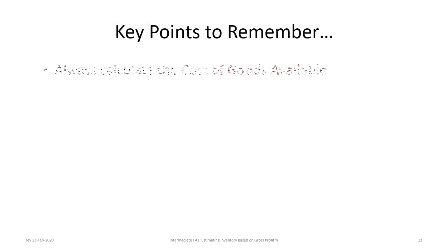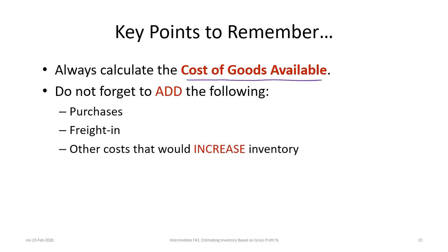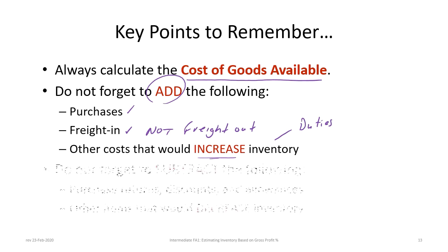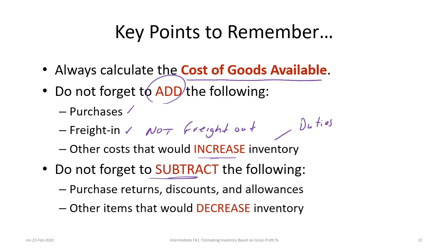Some key points to remember: always calculate the cost of goods available, and don't forget to add purchases, freight in (not freight out), or any other cost that would increase inventory — such as duties, import costs, border charges, or non-refundable value-added taxes like provincial tax. Also, do not forget to subtract any purchase returns, discounts, or allowances, or any other items that would decrease inventory.